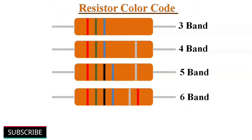The color bands of resistors are basically four types: 3-band to 6-band resistors. In order to find the resistance of a resistor, we need to decode the colors printed on the resistor's surface. The decoding changes depending on the number of color bands painted on the resistor's surface.